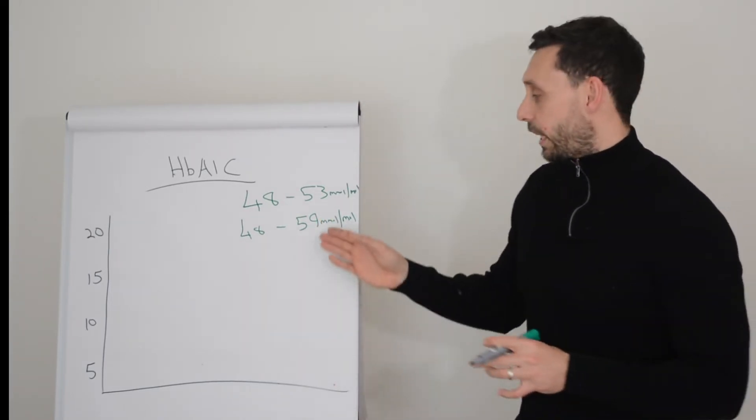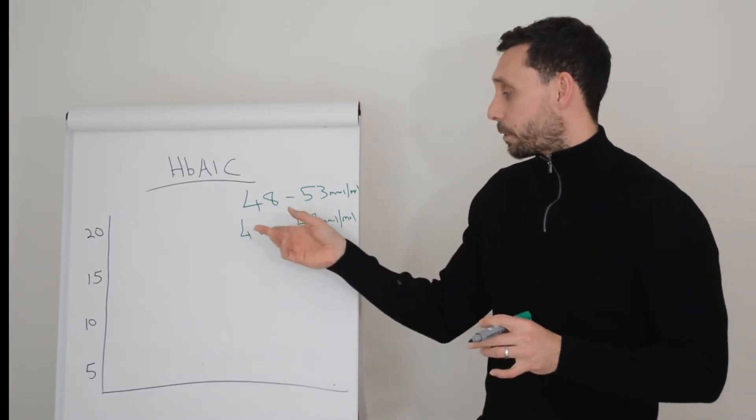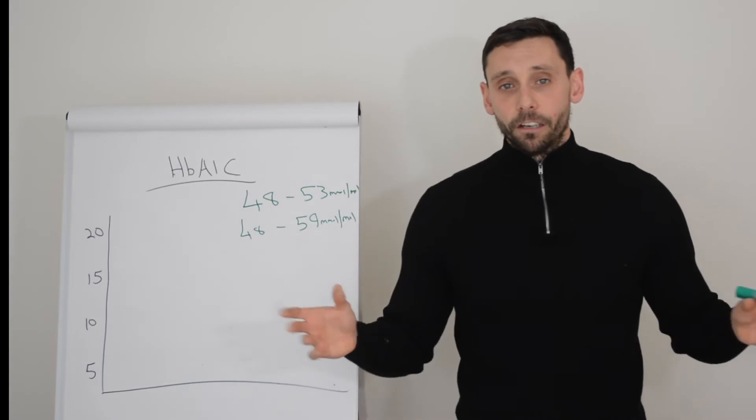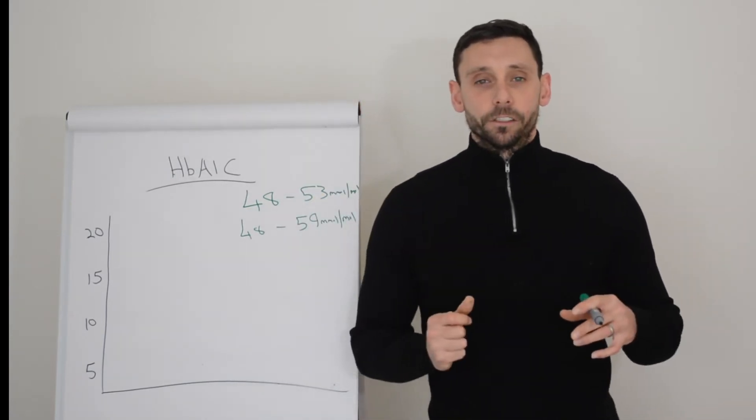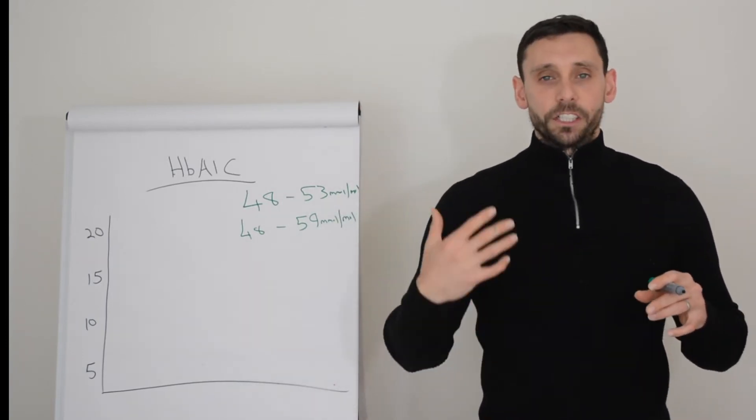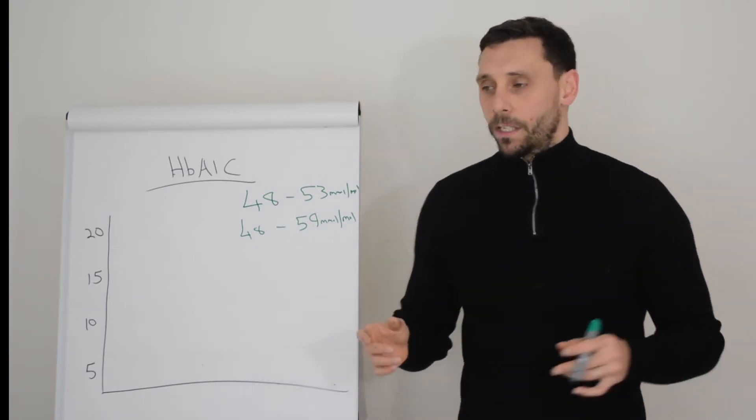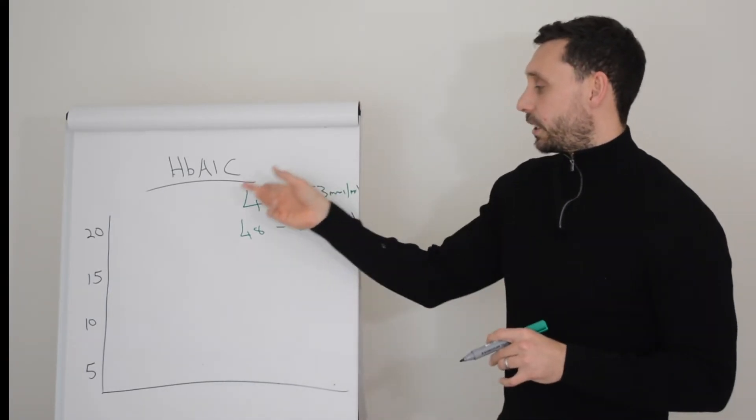So a one-off HbA1c of say 100 isn't great, but if all the other times you're running between 48 and 53 throughout your life, that little blip's not going to make a big difference. Whereas if you're perpetually running with a HbA1c of over 100, the risk of complications starts to stack up because your average glucose over your lifespan is much higher. So ideally we want to get as close to these figures as possible.